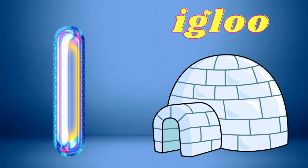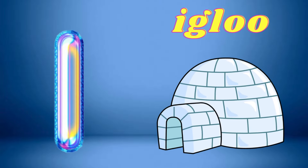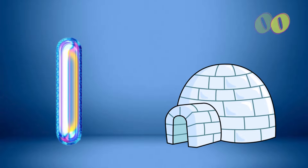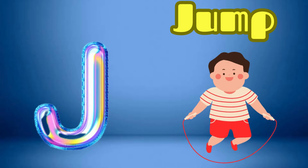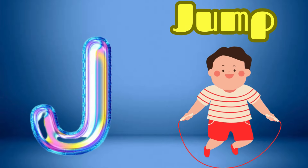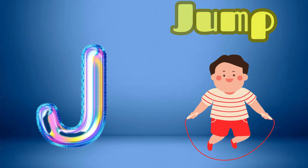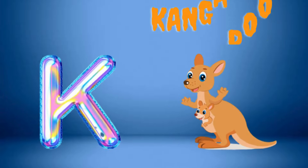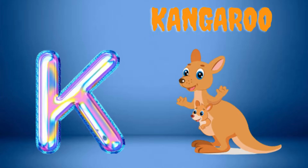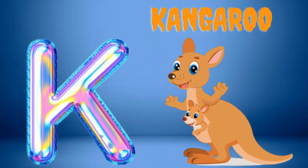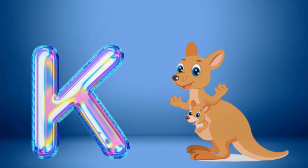I is for Igloo, I-I-Igloo. J is for Jump, J-J-Jump. K is for Kangaroo, K-K-Kangaroo.